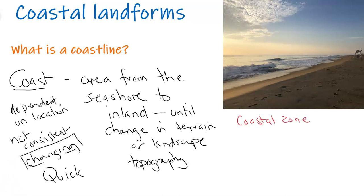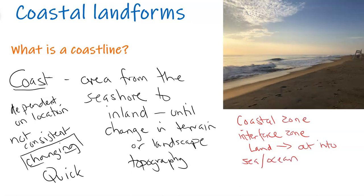Another term you might hear is coastal zone. A coastal zone is basically the interface zone — it extends from the land out into the ocean or the sea, up until the edge of the continental shelf. The continental shelf is the submerged part of the land; it goes out through the seabed in a gentle descent or gradient down into deeper areas of the ocean, until it gets to the continental slope, which is a sharp increase in depth down to the ocean floor.